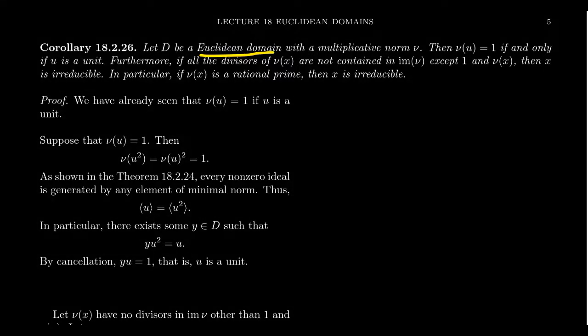Recall that a Euclidean domain is an integral domain which has a norm attached to it such that that norm satisfies the division algorithm. I should say it has a division algorithm. There always exists some quotient and remainder up to some uniqueness conditions.